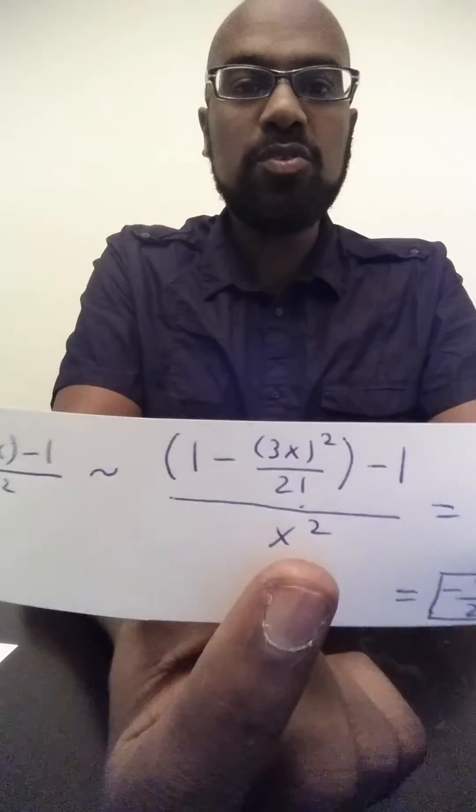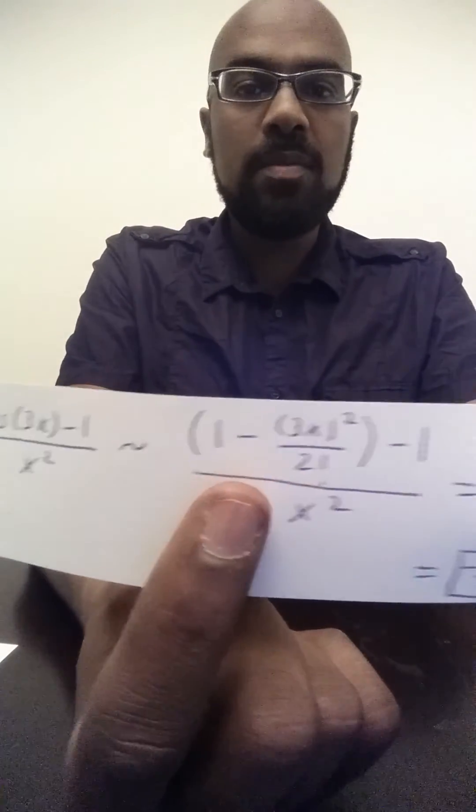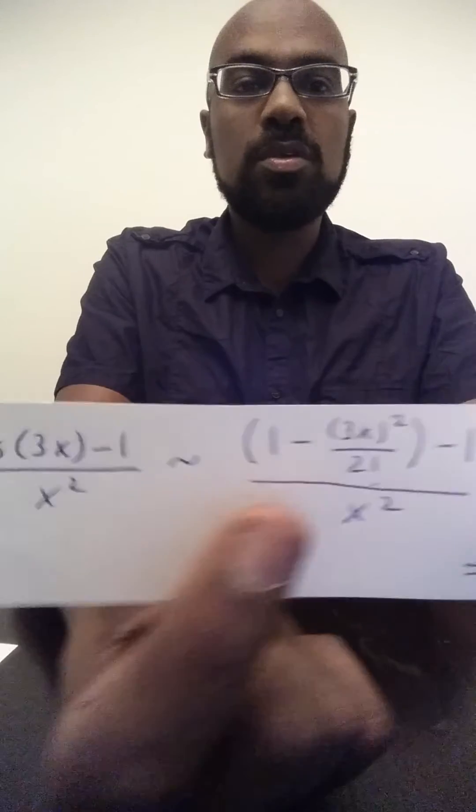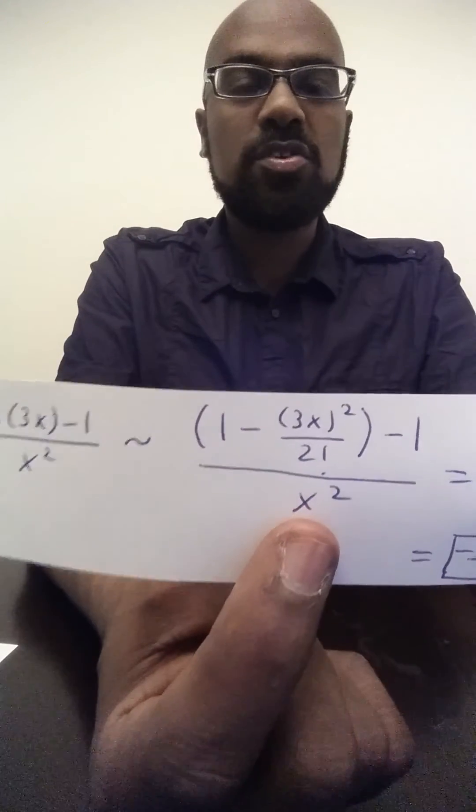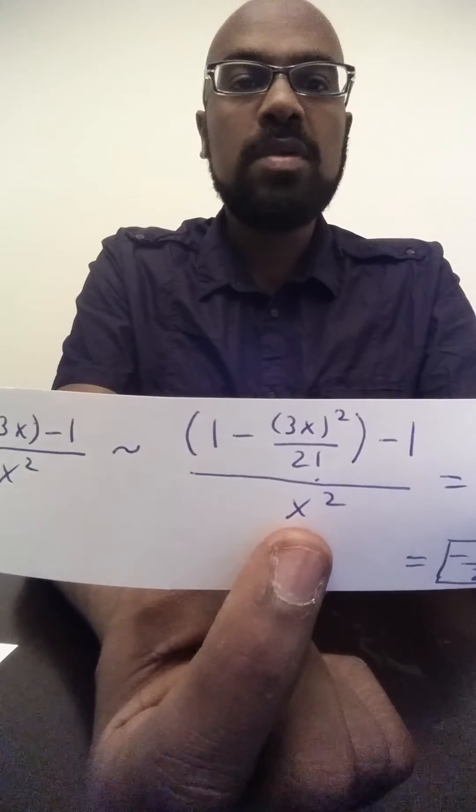Now, a question you might ask is why use the quadratic term for the approximation, the quadratic approximation of cosine 3x, and the reason is because we have a quadratic term on the denominator.